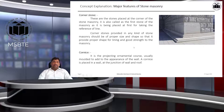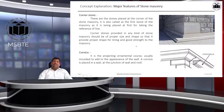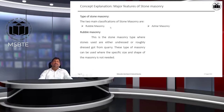Cornice: a cornice is a projecting ornamental course, usually molded, at the top appearance of the wall. It is placed at the junction of the wall and roof. You may have observed such ornamental shapes at this junction — these are called cornices, and they are provided to increase the aesthetic appearance of the construction or stone masonry work.